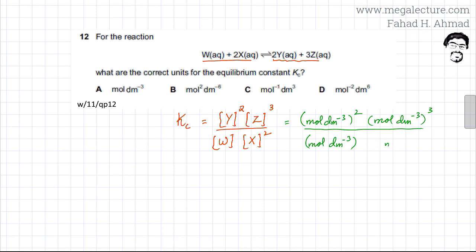Now a simpler way to simplify this is think of mol per dm³ as x. So it's basically x² times x³ divided by x multiplied by x². So it's x⁵ divided by x³, and the answer is going to be x².